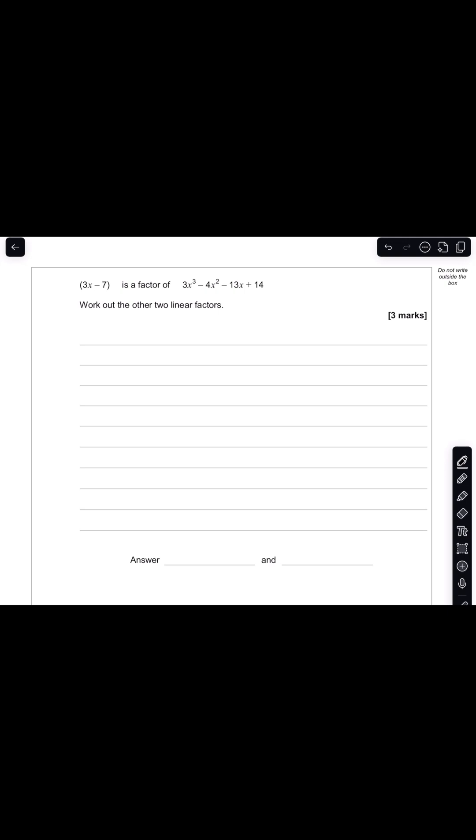So what we need to do for this question is simply use long division. So I'm going to divide the cubic expression by the linear expression. I'll write this out as 3x minus 7 into our cubic expression which is 3x cubed minus 4x squared minus 13x plus 14.